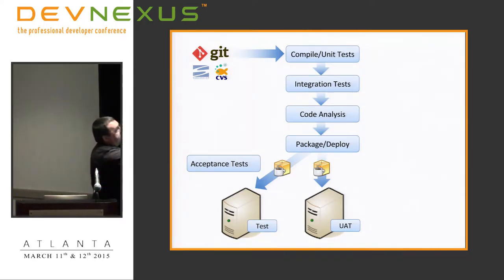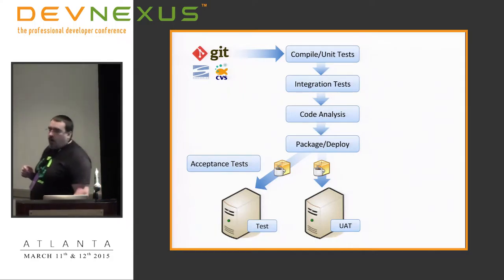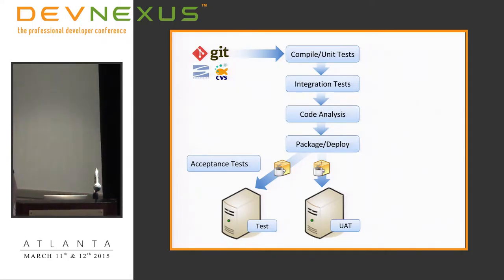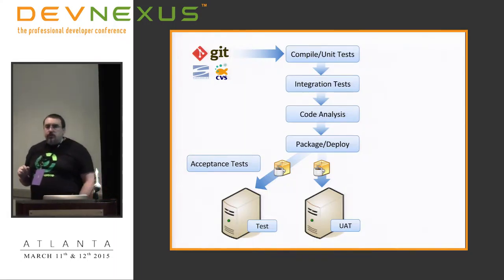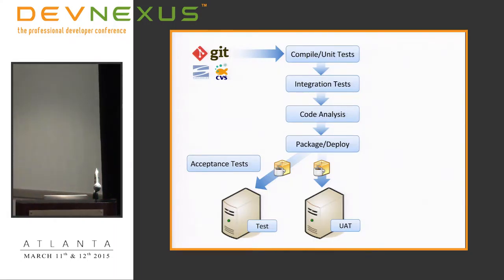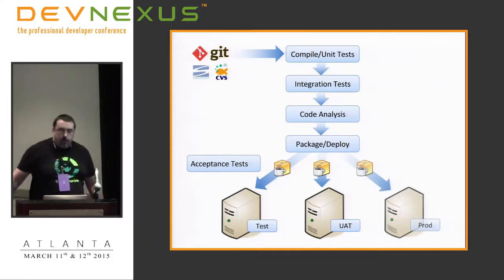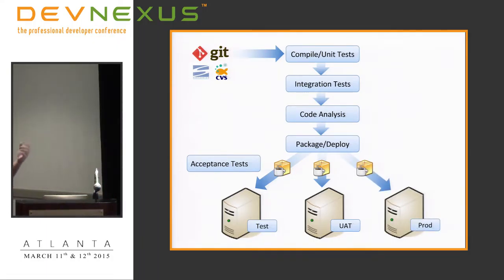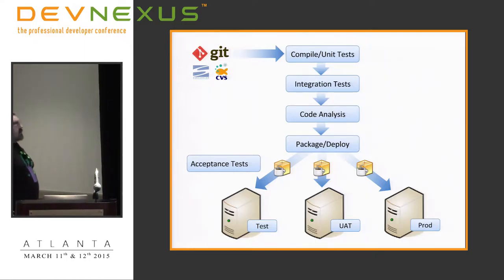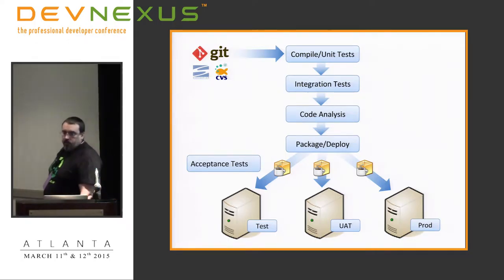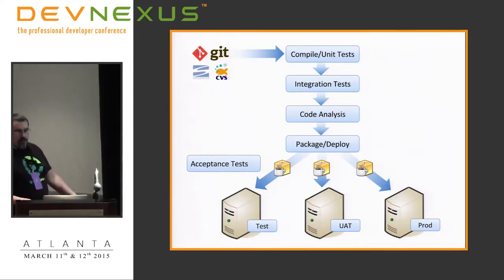Up to acceptance tests, everything is automated — just by virtue of checking something into source control, we kick off this process all the way through acceptance tests. At that point, whether we go into user acceptance testing or not, we make a human decision: are we happy with this set of changes? If yes, we go into user acceptance testing, and if it passes, we go into production. These would be manual steps. You could fully automate all of this. If we had very good confidence in our automated testing, we could leave user acceptance testing out altogether and just push to production, then do post-production verification.